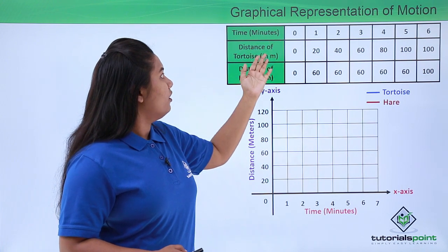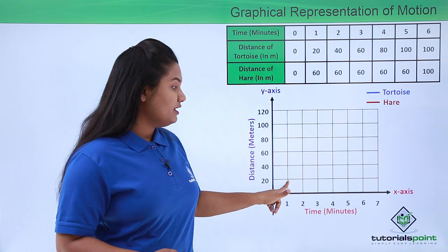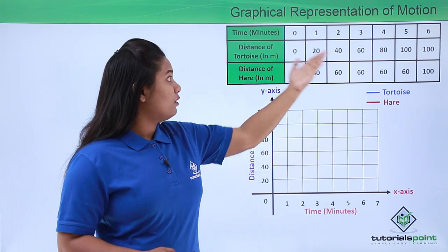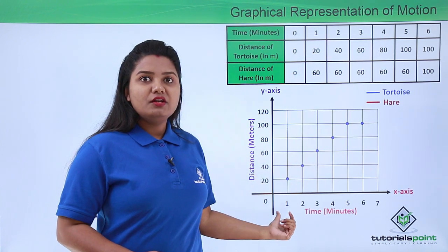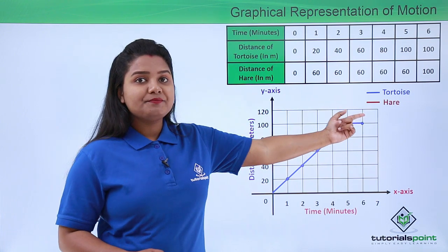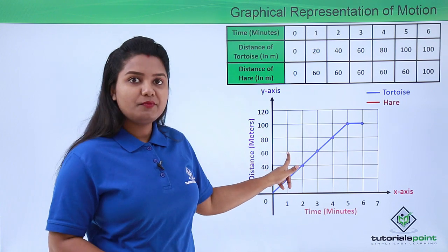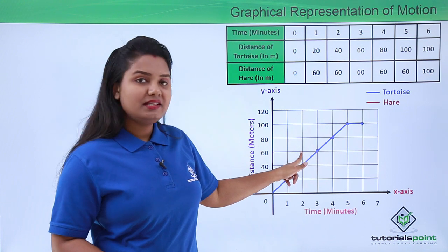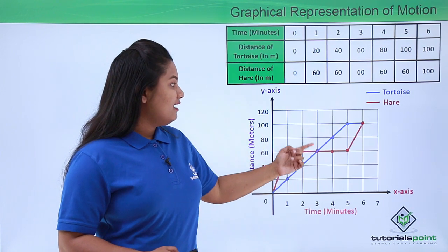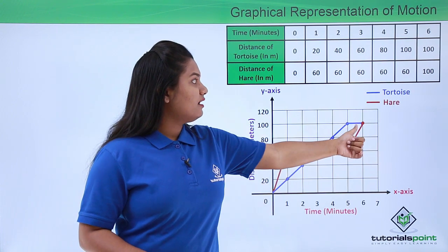We begin by plotting the points for the tortoise. The first point is (0, 0) at the origin, the second point is (1, 20), the third point is (2, 40), and so on until all six points are plotted. Joining all these points gives us the graph for the tortoise's motion. For the hare, the first point is (0, 0) at the origin, the second point is (1, 60), and we mark all the remaining points similarly. Joining all these points gives us the graph of the hare's motion. The red graph shows the motion of the hare and the blue graph shows the motion of the tortoise.